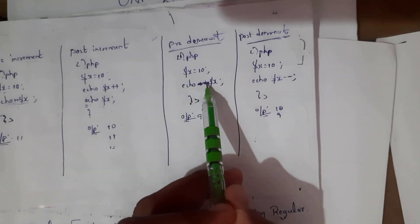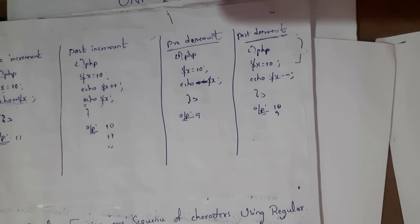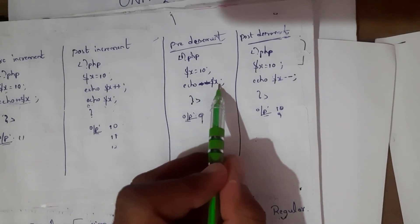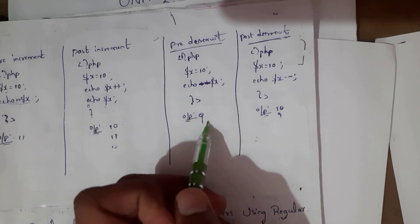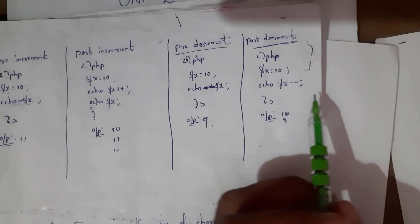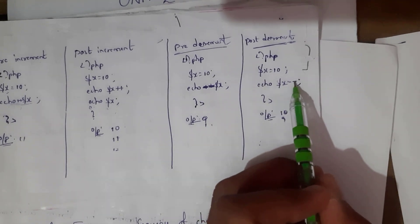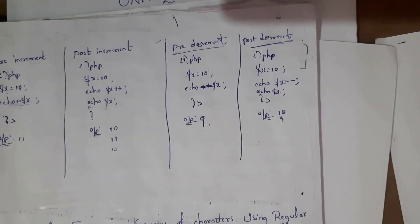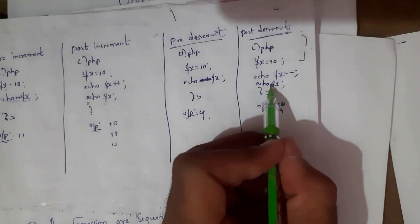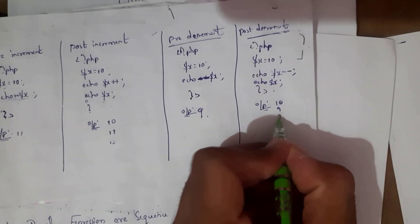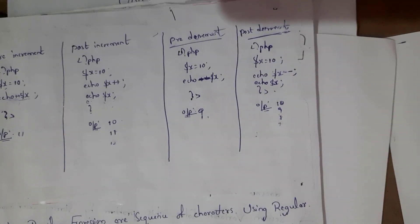For pre-decrement: '$x = 10', 'echo --$x' — it decrements the value first, so 10-1=9, output is 9. For post-decrement: '$x = 10', 'echo $x--' — it generates the current value first, then decrements. These are the examples of pre-increment, post-increment, pre-decrement, and post-decrement.